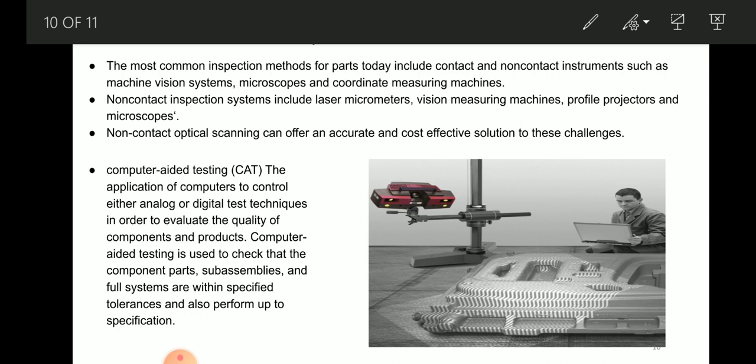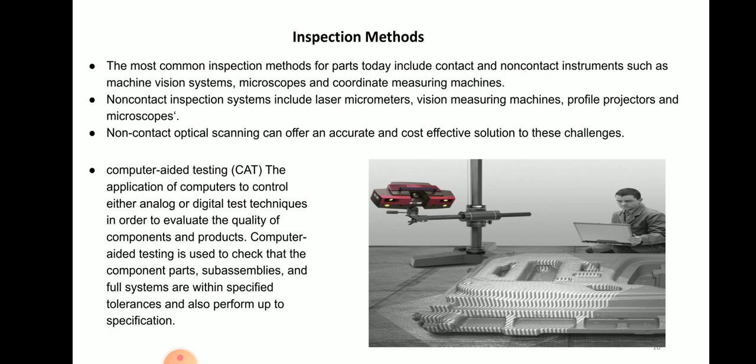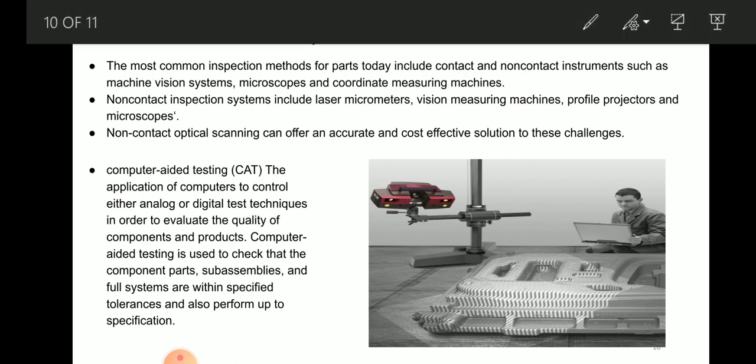Computer-aided testing, also called CAT, is the application of computers to control either analog or digital test techniques in order to evaluate the quality of components and products. Computer-aided testing is used to check that component parts, sub-assemblies, and full systems are within specified tolerances and perform up to specification.